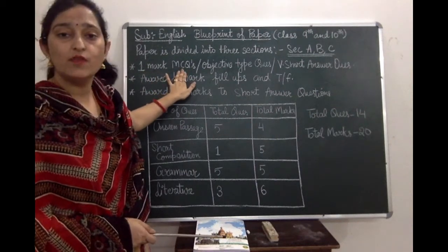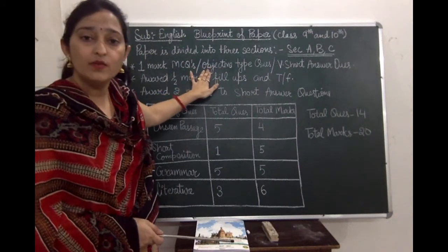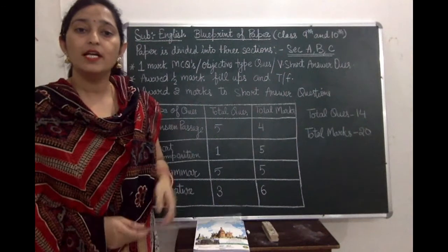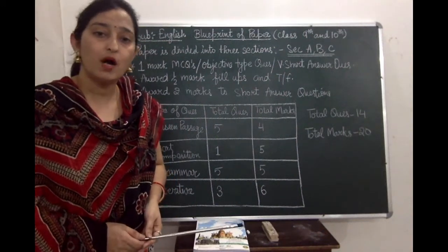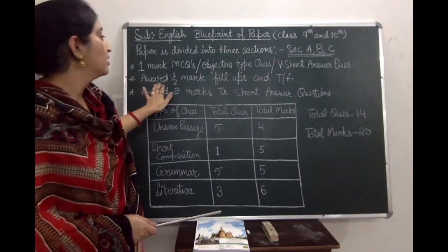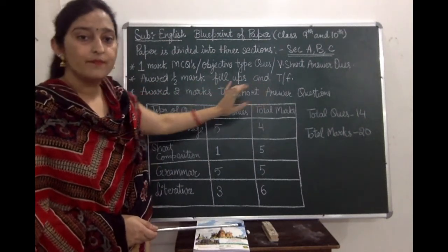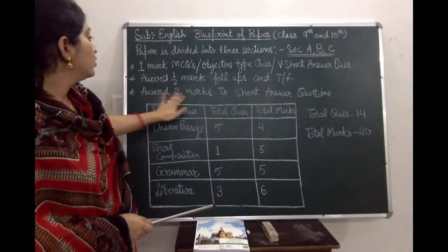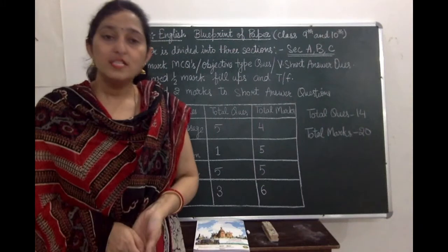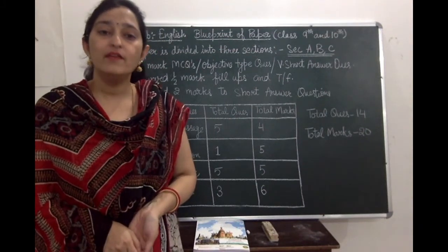For one mark: MCQ, objective type questions, or very short answer (one-line answer) questions will carry one mark each. You will get half a mark for fill in the blanks or true/false questions. Short answer questions will carry two marks each.